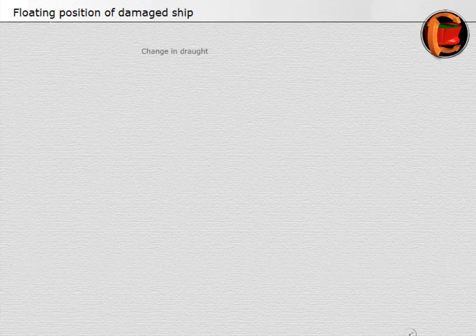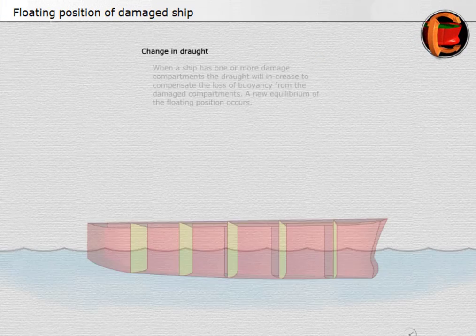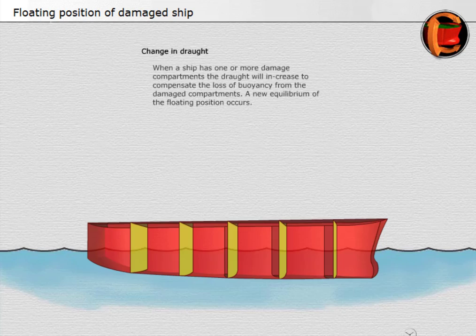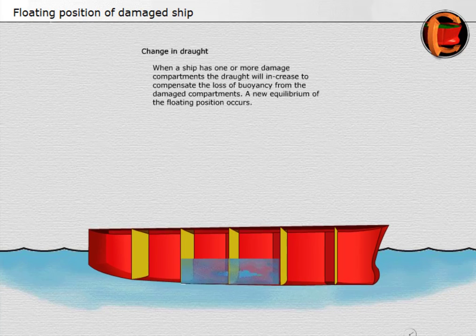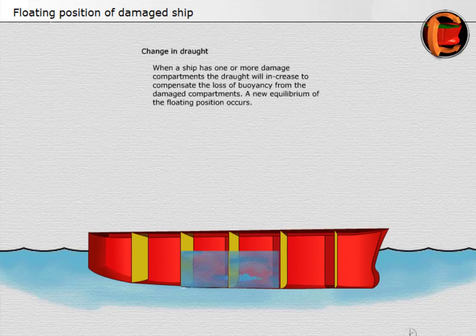Change in draft: when a ship has one or more damaged compartments, the draft will increase to compensate the loss of buoyancy from the damaged compartments, and a new equilibrium of the floating position occurs.